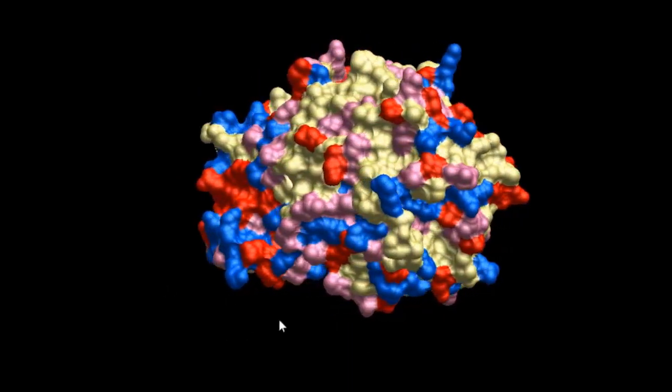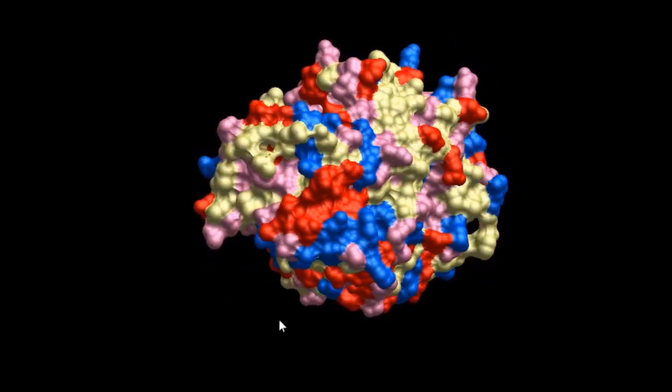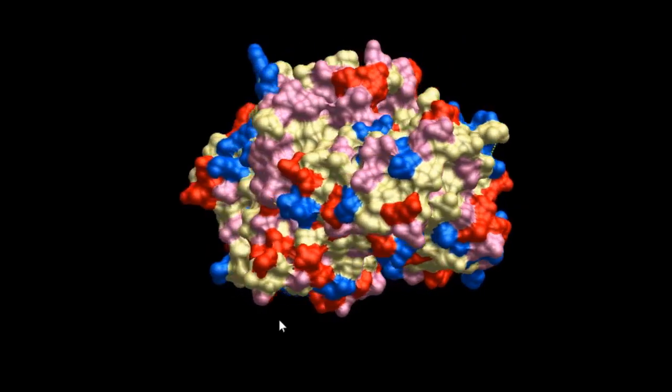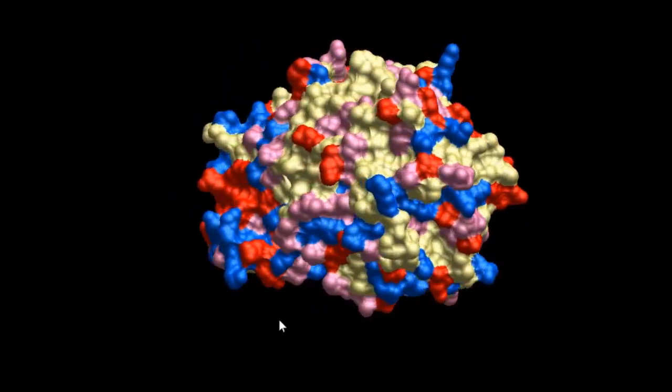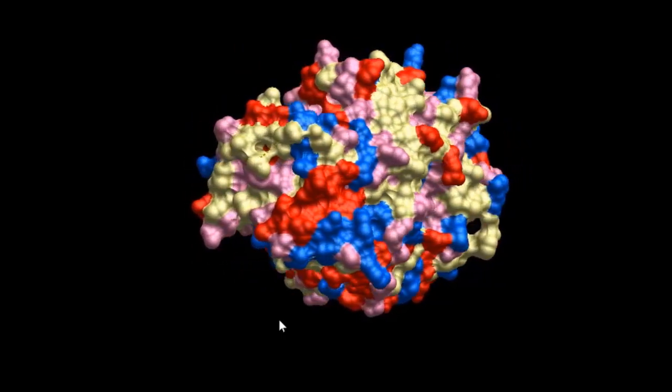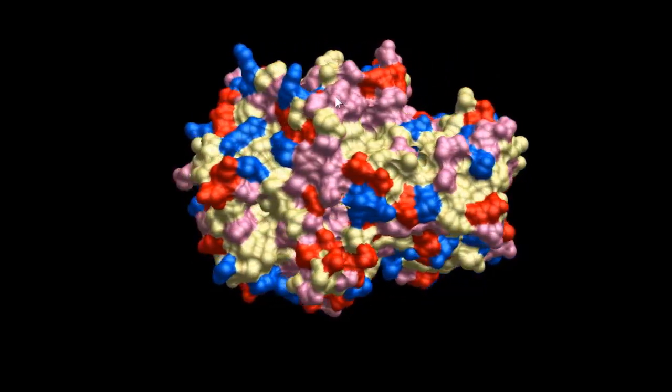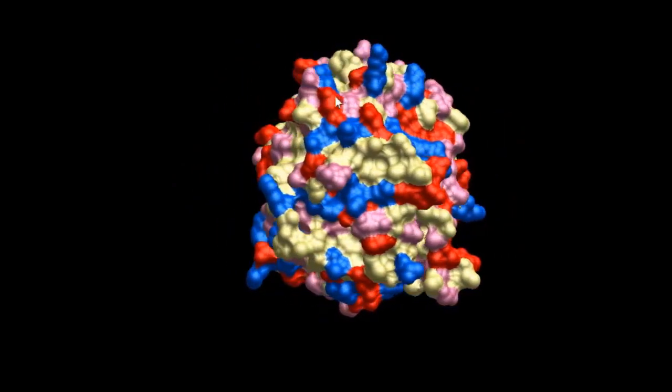Next, we have a look at a surface rendering, and the color coding of the surface is by polarity of the amino acids. In red, you have negatively charged amino acid side chains, that's glutamate and aspartate.